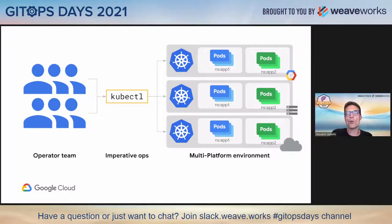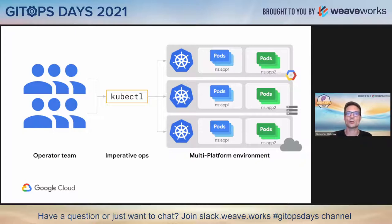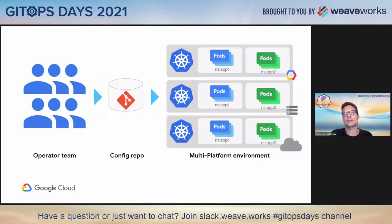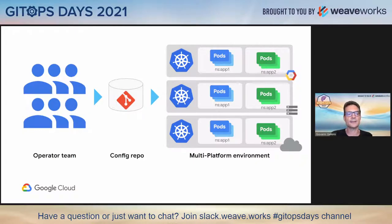I will describe a way of moving from an imperative way of managing Kubernetes clusters, where you typically apply commands to the Kubernetes API server through kubectl or any other tool, and this configuration is not repeatable because it doesn't live anywhere besides the clusters, to a declarative way of doing this. The cluster configuration is inside a central Git repository and all clusters sync with this central configuration and apply and enforce what is defined centrally.